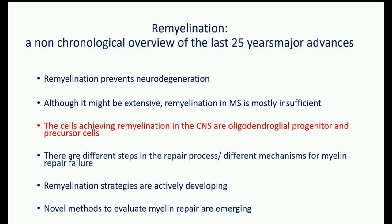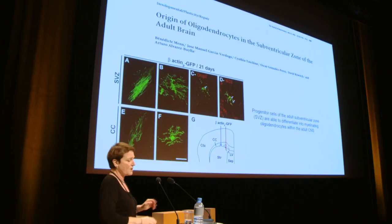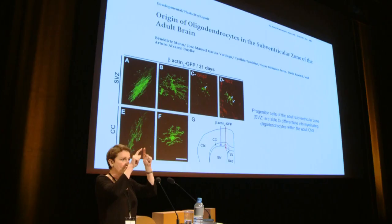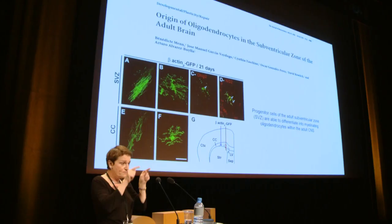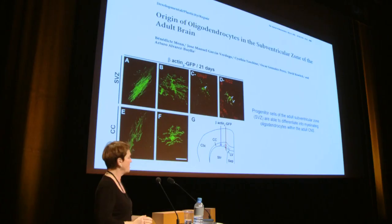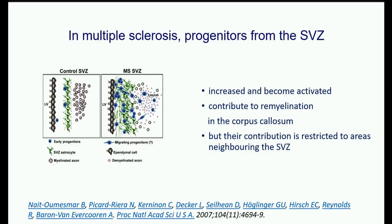Oligodendrocyte progenitor cells are located in the periphery of ventricles in the adult brain. Work by Arturo Alvarez-Buylla in 2006 showed that cells sitting at the border of the ventricles in the adult CNS can differentiate into oligodendrocytes. Work by Abraham Nait-Oumesmar and Annick Baron from the Paris institute demonstrated that these progenitors from the subventricular zone are also present in MS brain, showing increased numbers and activation.